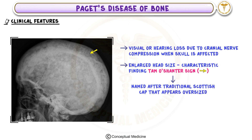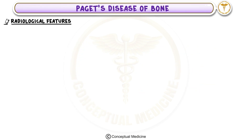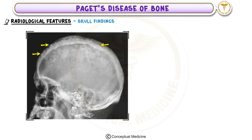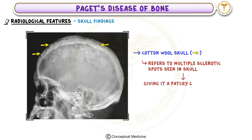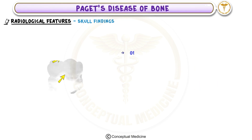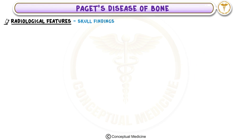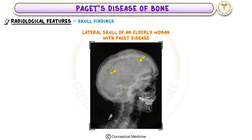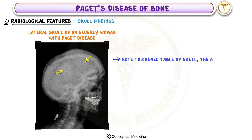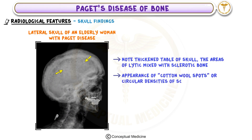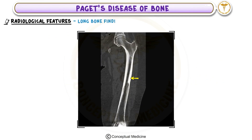Skull findings in Paget's disease include the cotton wool skull, referring to multiple sclerotic spots giving the skull a patchy, cotton-wool-like appearance on x-rays. Osteoporosis circumscripta appears as large lytic areas in the skull, representing early destructive changes. On lateral skull x-ray, one can note the thickened table of the skull, areas of lytic mixed with sclerotic bone, and the characteristic cotton wool spots.